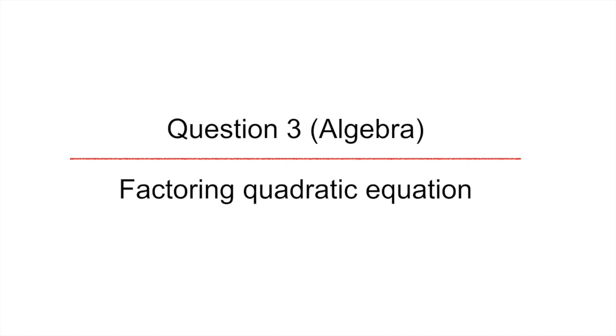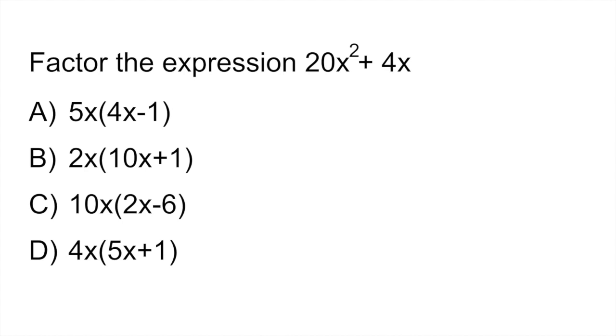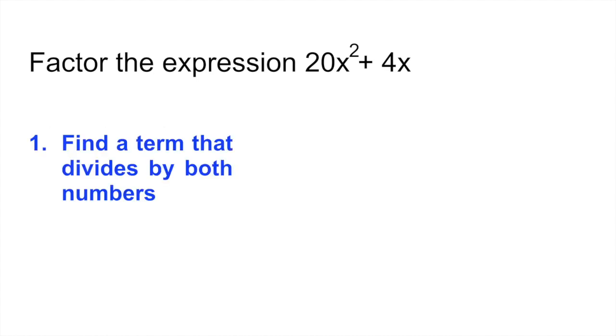Question three is an algebra question and it looks at how to factor a quadratic equation. So this is an expression that is a little bit more simple than what you usually get but we have to start somewhere. So let's start with factoring this expression 20x squared plus 4x. So what you would do here is first of all find the term that divides by both numbers. So if you take your 20x squared and you divide it by 4x that gives you 5x, and if you take 4x and you divide it by 4x that gives you 1. So 4x is the term that divides by both numbers.